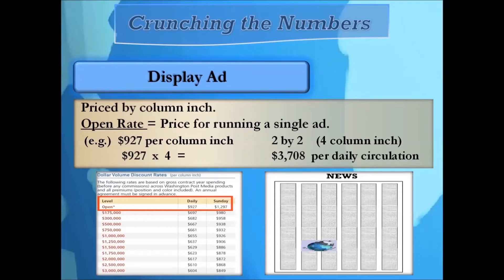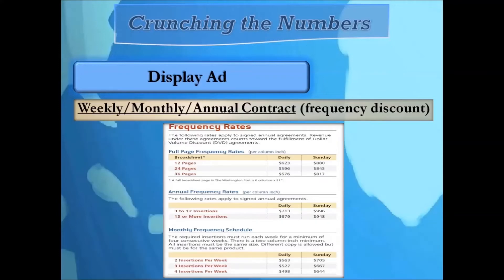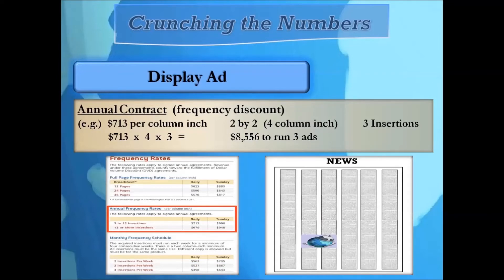Display ads are priced by column inch. Using the Washington Post ad rate card as a reference: the open rate is used if you want to advertise occasionally or just test the waters, and it's the most expensive since there's no discount. The open rate for daily is $927 per column inch, so a two-by-two (four column inch) ad would cost $3,708 per day.